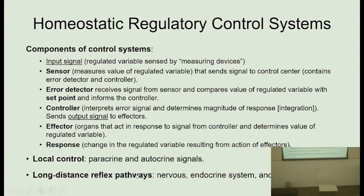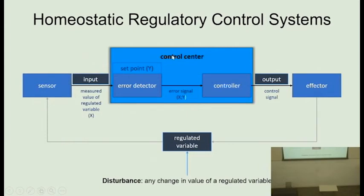There are local control systems and long-distance control systems called reflex pathways. Locally in tissues we have paracrine and autocrine signals. Reflex pathways involve the nervous system, the endocrine system, and cytokines or inflammatory mediators. In the diagram, we have the input value of the regulated variable X, the control center with its error detector and controller deciding the set point, and the effectors which modify the regulated variable in response to any disturbance.